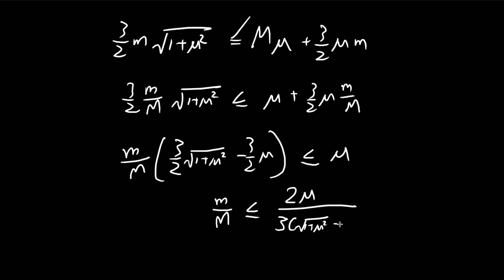1 plus mu squared minus mu. And then you can actually rationalize this. So you just multiply the numerator and denominator by square root of 1 plus mu squared plus mu.